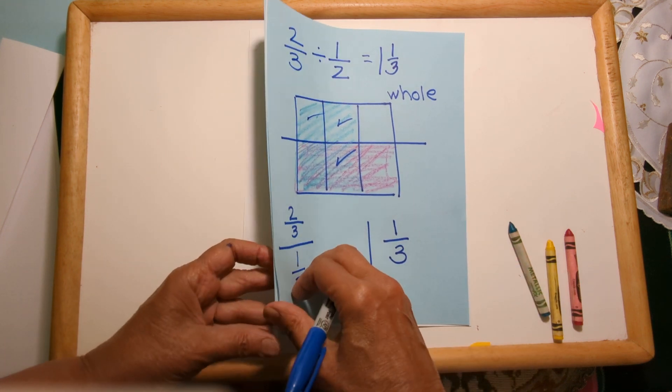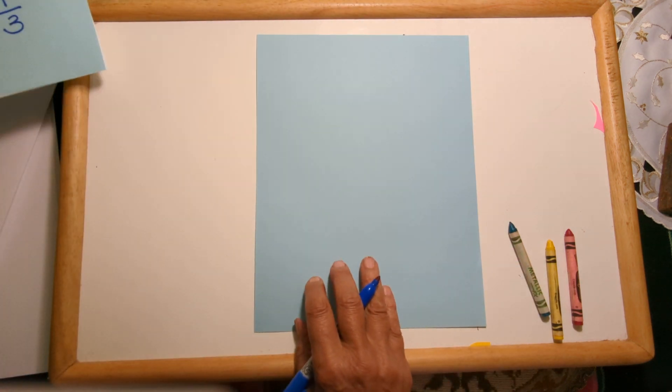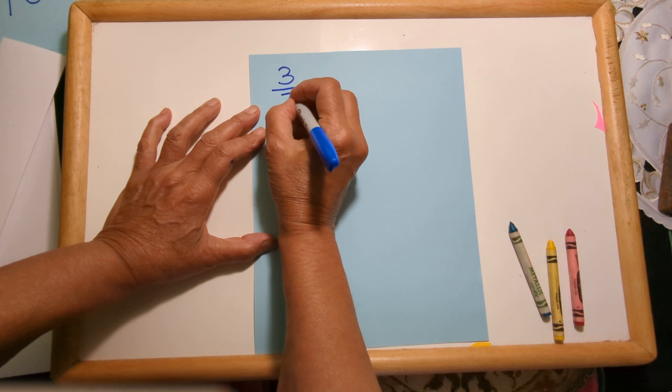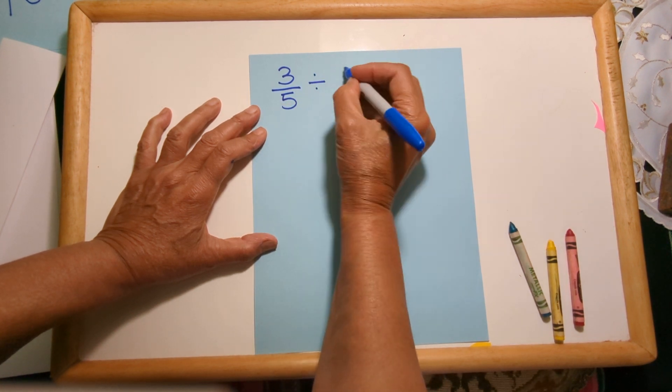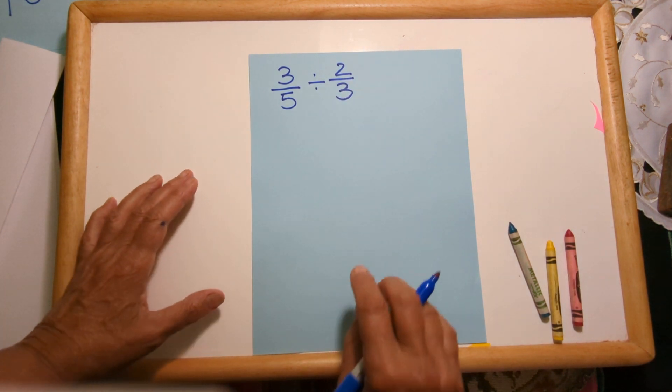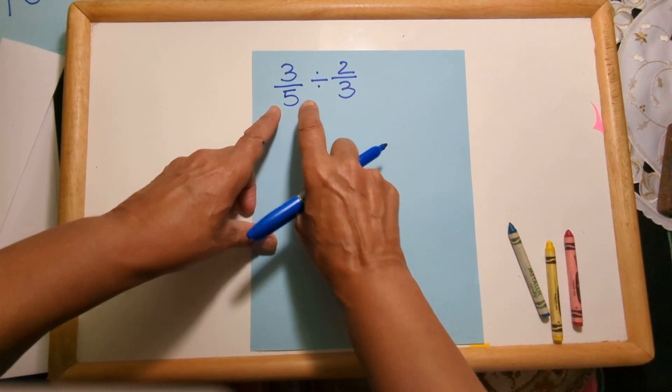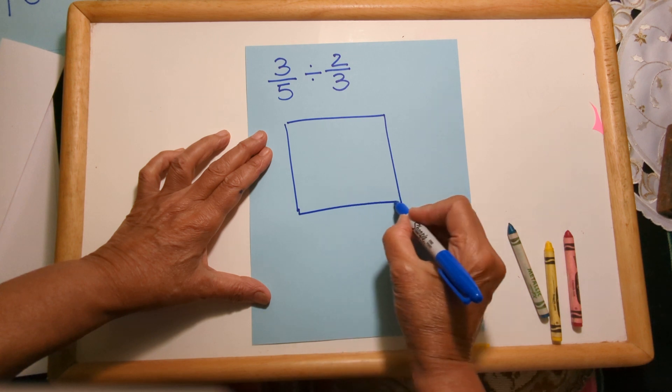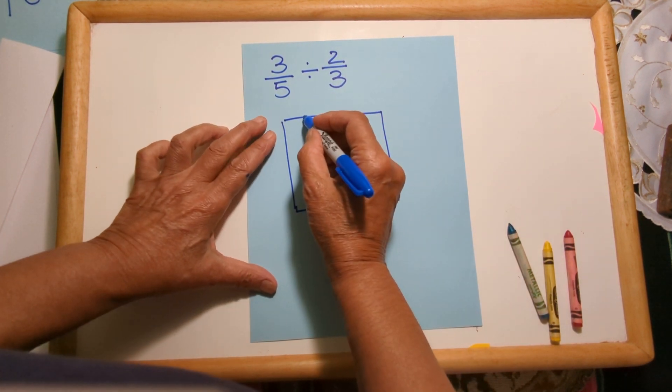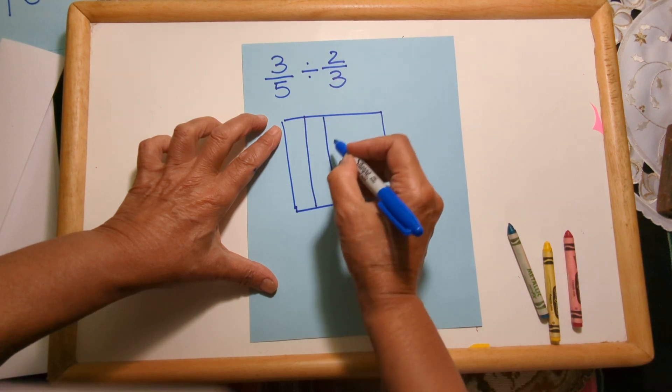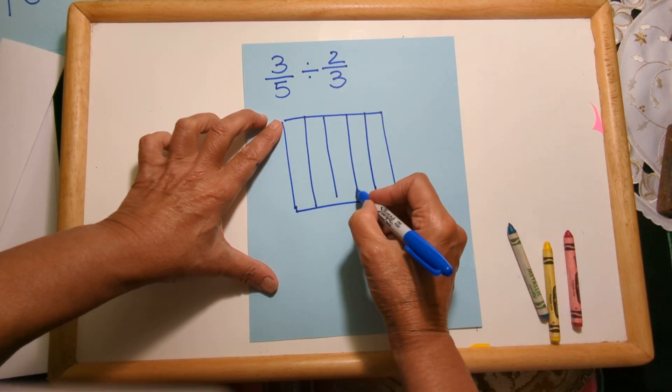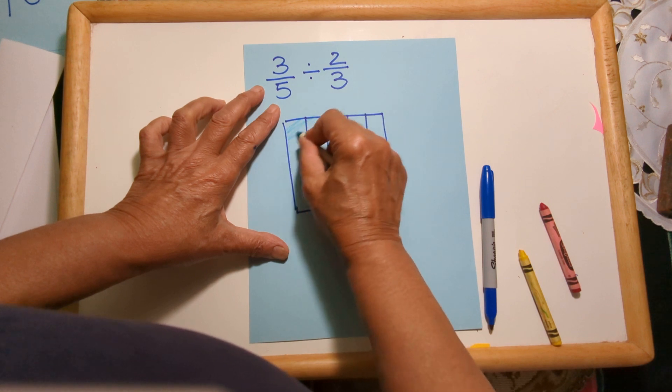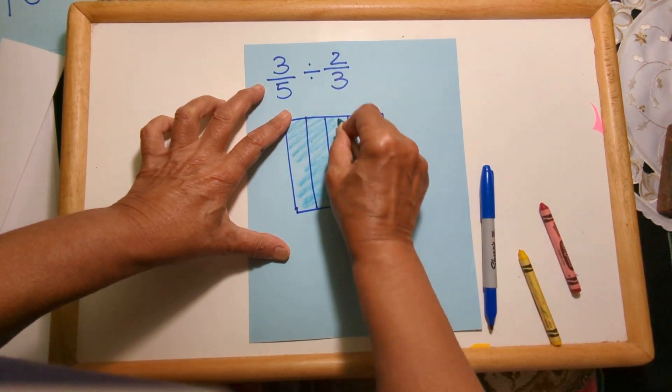Okay, I'm going to do one more because these are so much fun to do. So let's see what 3/5 divided by 2/3 looks like. This is asking how many two-thirds fit into three-fifths. I'll start with my whole thing again, my whole square, and do fifths—so that's one, two, three, four, five—and three of these look like that.